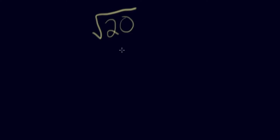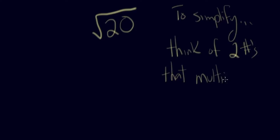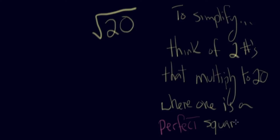Let's take a look at what simplifying radicals might look like. My favorite example is the square root of 20. So you ask yourself, what two numbers multiply to give you 20 where one is a perfect square? That's the key — you must think of two numbers that multiply together where one is a perfect square.